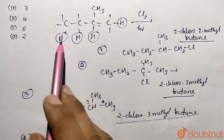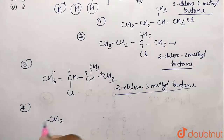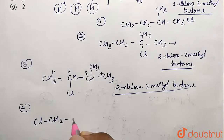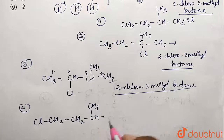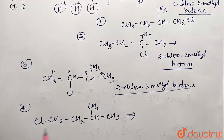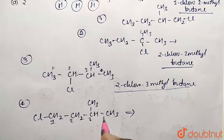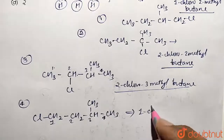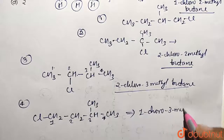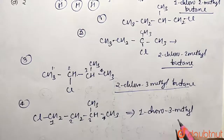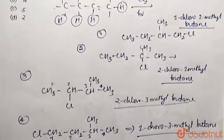Similarly, substituting at the fourth position gives another product: CH2Cl–CH2–CH(CH3)–CH3. This is the same carbon skeleton as before but the numbering changes when starting from the chlorine side: one, two, three, four — so this is named 1-chloro-3-methylbutane. These are the four structural isomers obtained from monochlorination of 2-methylbutane.